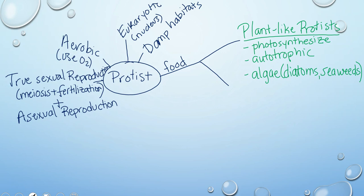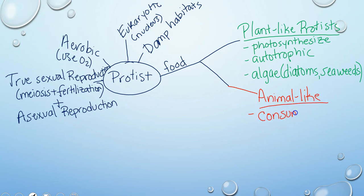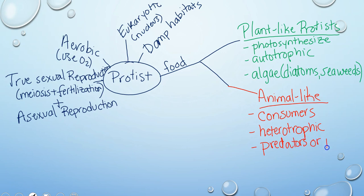Our other branch of protists gets their food by feeding on other sources. We start with our animal-like protists. These are consumers — we can also call them heterotrophic, which means other-feeding. They feed on other organisms, and in doing so they can be either predators or parasites. Examples include amoeba, paramecium, and malaria.